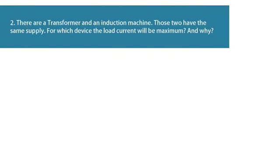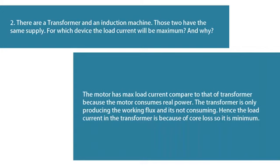Question 2: There is a transformer and an induction machine — both having the same supply. For which device will the load current be maximum, and why? The motor has maximum load current compared to that of the transformer because the motor consumes real power. The transformer is only producing the working flux and not consuming it. Hence the load current in the transformer is only due to core loss, so it is minimum.